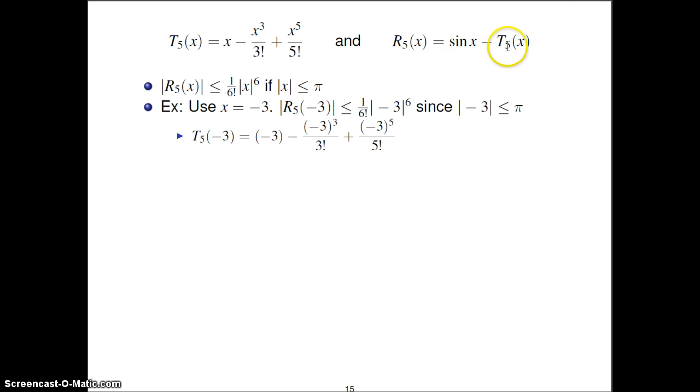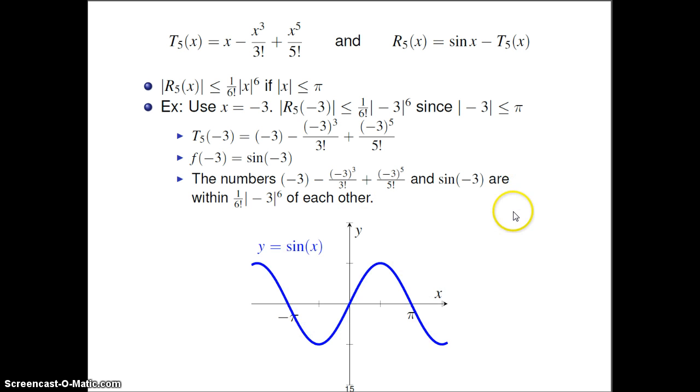And as an example, if you plug in x = -3, negative 3 works. If you absolutely value that, that's smaller than pi. So plug in a negative 3 for the x there and there, and you get this inequality right there. And what does this inequality even mean? This says that if you look over here, that the values of these two things don't differ by so much. So let's really write this out. I'm going to write out, right here, T_5 of, plug in the number negative 3. And I just plugged in for each of the x's the number negative 3. Didn't even clean that up. Also, sin(x), let's plug in negative 3. And what this inequality is saying is that these two numbers, namely this first number right here, and then this second number that we computed, these two numbers are within 1 over 6 factorial times absolute value of negative 3 to the sixth power of each other.